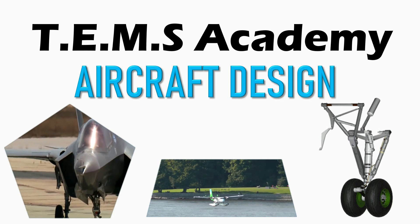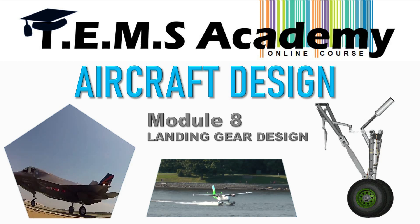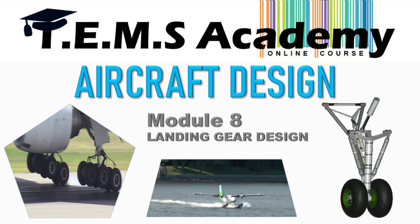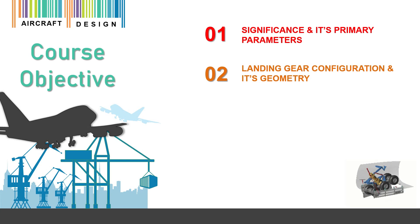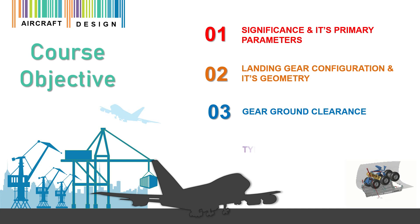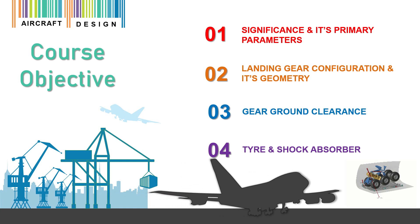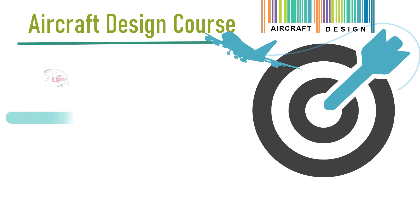Hello everyone, welcome back to the aircraft design course, module 8: landing gear sizing. Landing gear is another major aircraft component after the wing, fuselage, and tail plane. This video will give you a clear idea of the significance of landing gear and its geometry parameters, how it varies from aircraft to aircraft, the importance of ground clearance, and how selection of tires and shock absorbers play a key role in aircraft design. Stay tuned till the end of the lecture to learn and implement landing gear sizing in your own design.